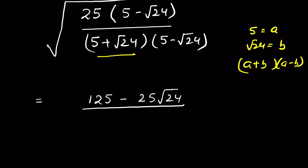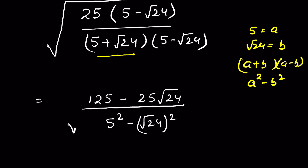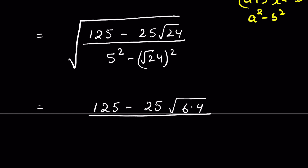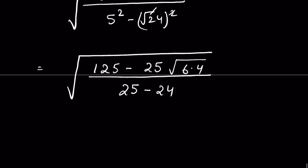This is a difference of squares, so we can write it as a squared minus b squared. That gives us 5 squared minus (square root of 24) squared under square root. So the numerator is 125 minus 25 square root of 24, and the denominator is 25 minus 24. Now 25 minus 24 is 1, so the denominator becomes 1.